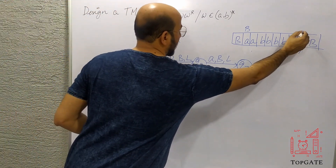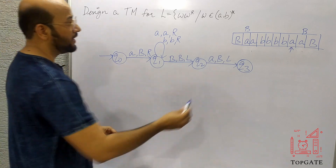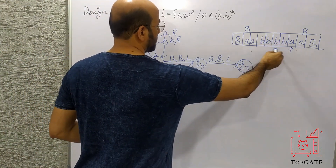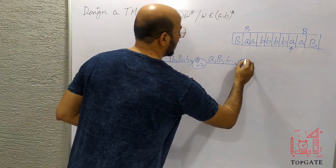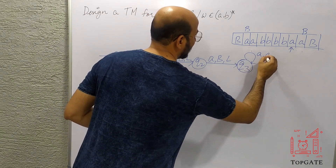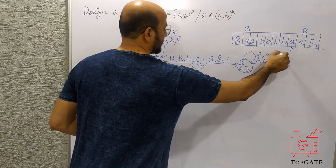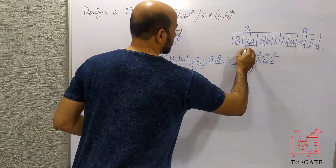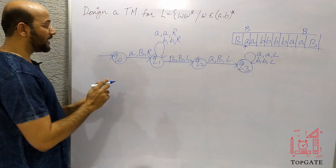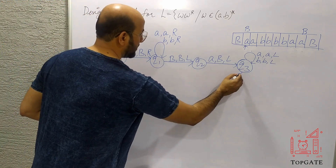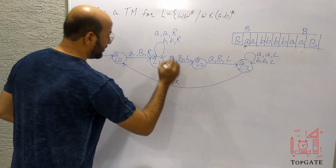At Q3, the A has been changed to blank and the pointer moves left to the next A. Now we need to skip everything — all the A's and B's — going left using a self loop: find A, keep A, go left; find B, keep B, go left. Finally the pointer stops at the leftmost B. Then from Q3, if we find B, keep it as B and go right, completing the first cycle and returning to Q0.